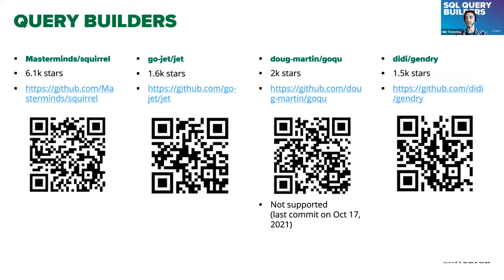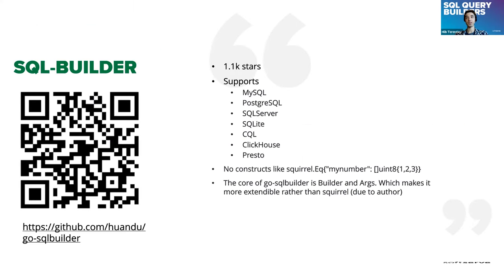I gathered some libraries for you as alternatives. We can't cover every library in the Go community, but I had experience with sql-builder, which supports MySQL, PostgreSQL, SQL Server, SQLite, ClickHouse, Presto, and others. According to the author, this library is better than squirrel because it avoids constructs like using a map for equality. It uses a builder and args idea, which makes it more extendable than squirrel.